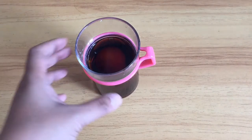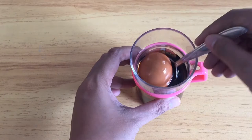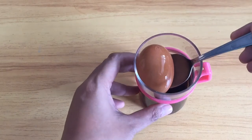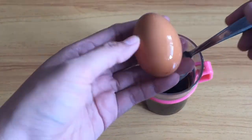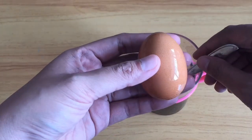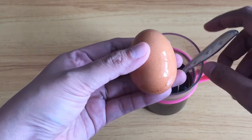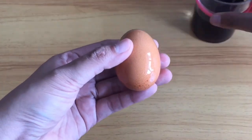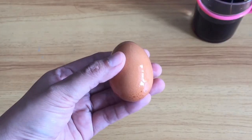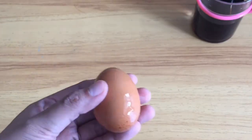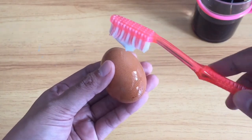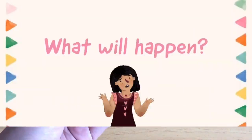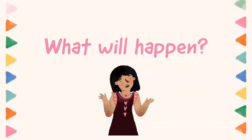On the next day, just take out the egg from the Coke. Can you see — is it changed? After this, we want to brush the egg with a toothpaste and toothbrush. What will happen?